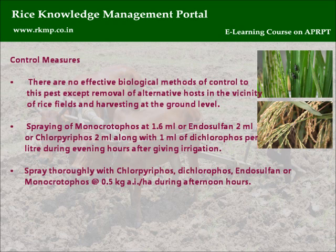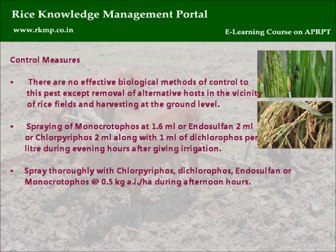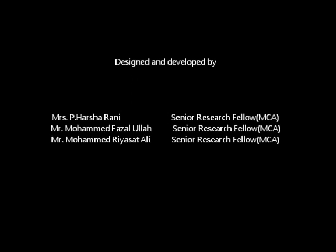Control measures: There are no effective biological methods for this pest except removal of alternative hosts near rice fields and harvesting at ground level. Spray Monocrotophos 1.6 ml, Endosulfan 2 ml, or Chlorpyrifos 2 ml along with Dichlorvos 1 ml per litre during evening hours after irrigation. Spray thoroughly with Chlorpyrifos, Endosulfan, or Monocrotophos at 0.5 kg AI per hectare during afternoon hours.